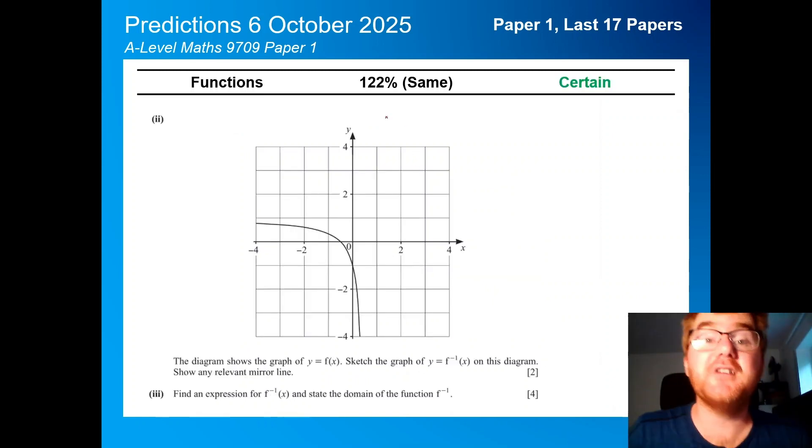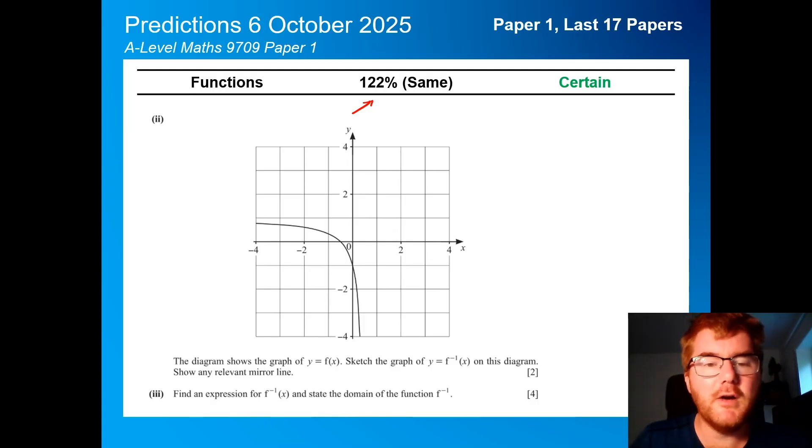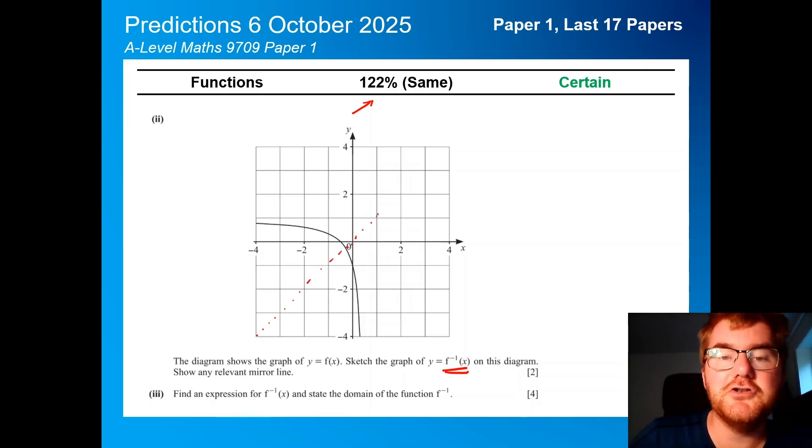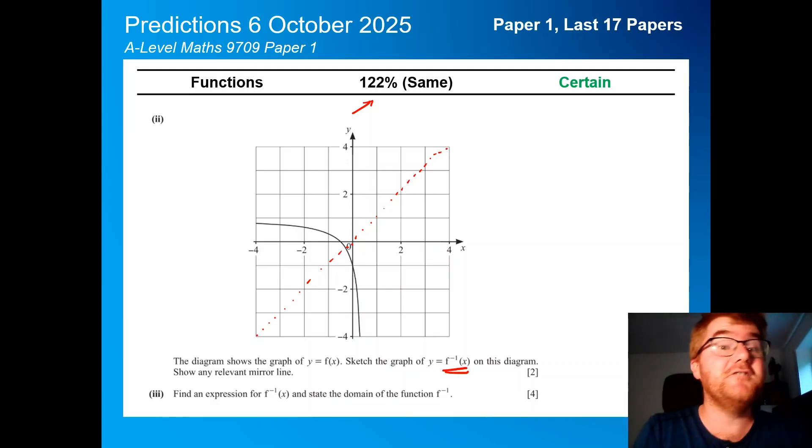On to functions, at 122%, that basically means it's going to appear in some shape or form, and usually a fairly long question as well. Here we need to sketch the inverse, using this idea of the reflection line of y equals x. If you're struggling with all these different facts for the A-level maths paper one, I've got a nice surprise for you at the end. Then actually doing some algebra here and working out both the inverse function itself and the domain in this case, but also range as well is useful.